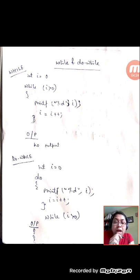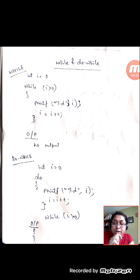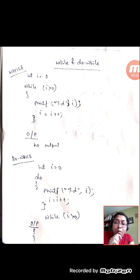In case of do-while: int i equals 0, then do — printf the value of i, then i plus plus. We will get the value 0 first, and then it increments. Since 1, 2, 3 are all greater than 0, it becomes an infinite loop. But if we put a condition like while i less than 0 in a do-while loop, whatever the condition — true or false — the do-while loop always executes at least once.